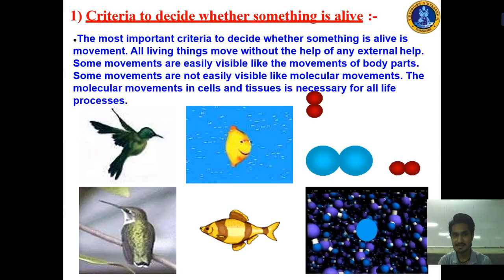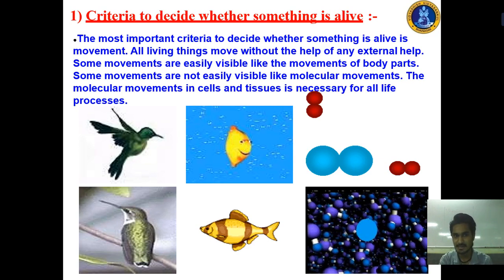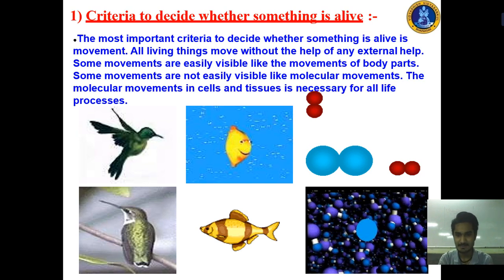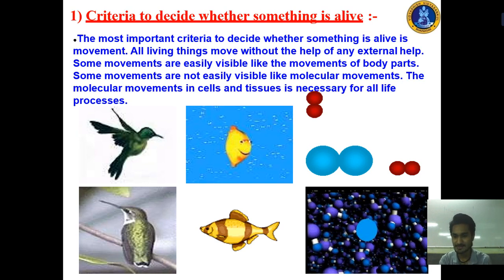In the previous lectures we studied how we can define that something is alive. What is the criteria to decide whether something is alive or not alive? The basic criteria is that something is alive if it is moving by itself — the thing moving by itself is called being in the alive state.